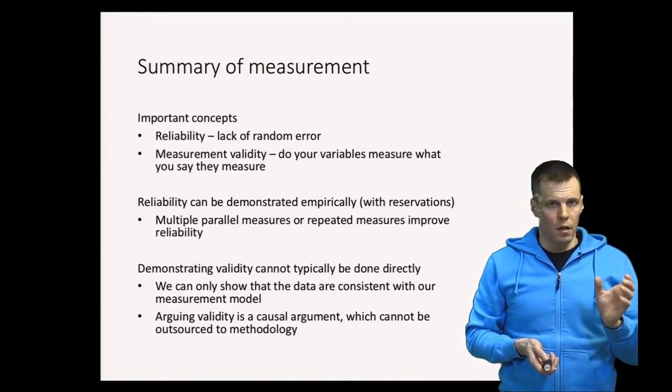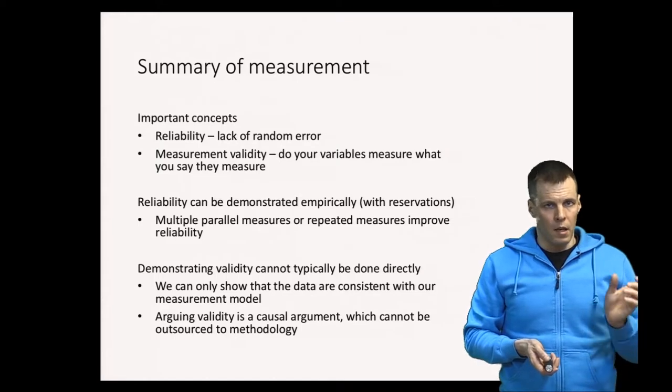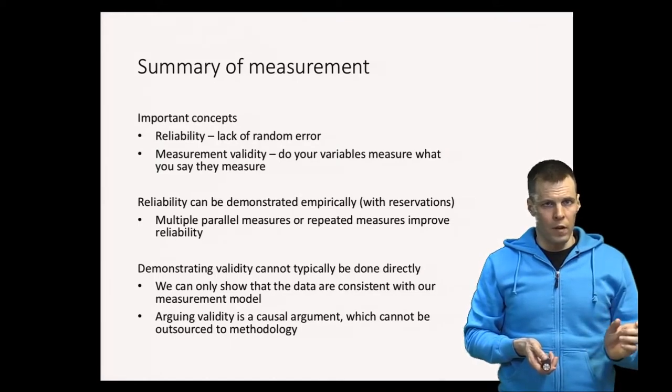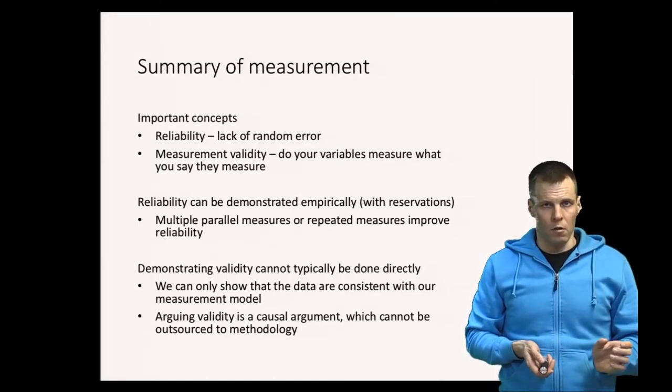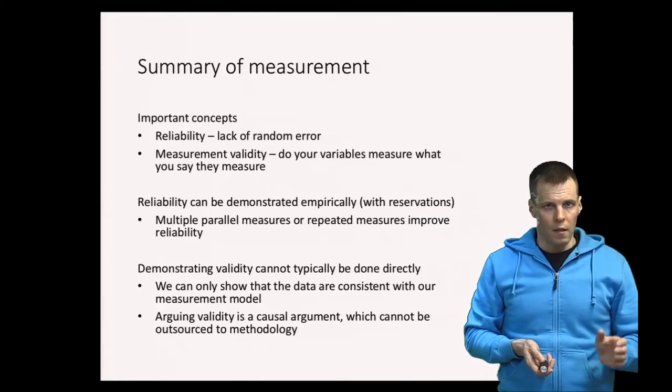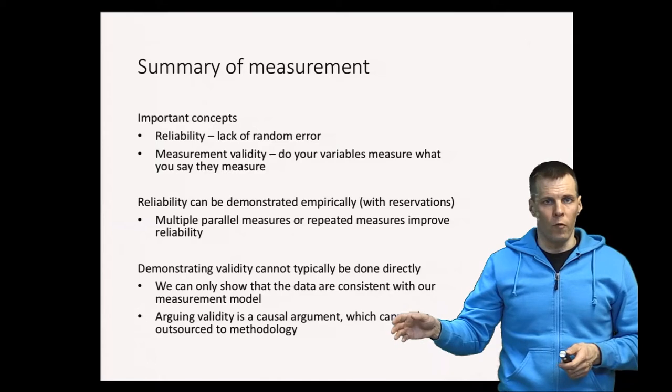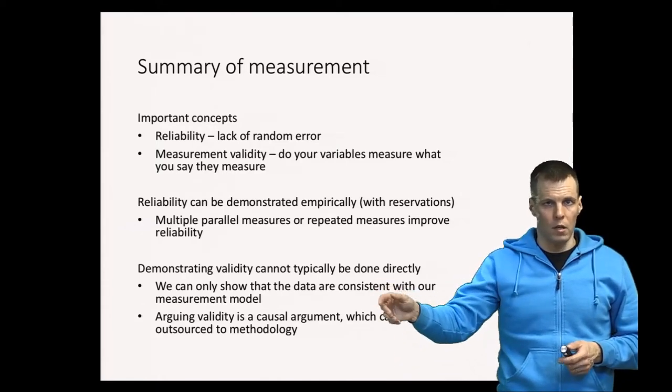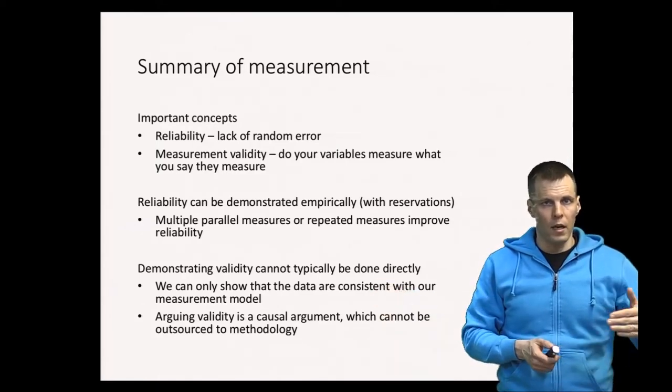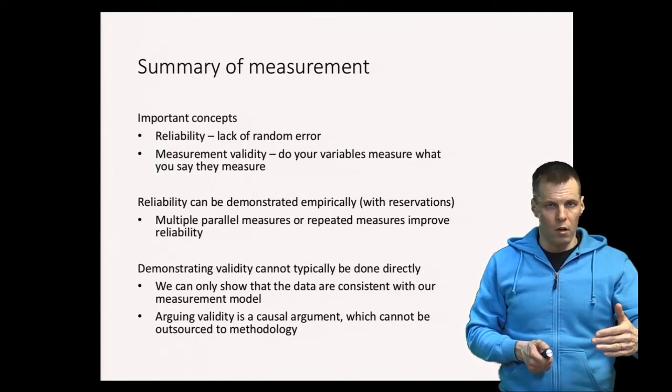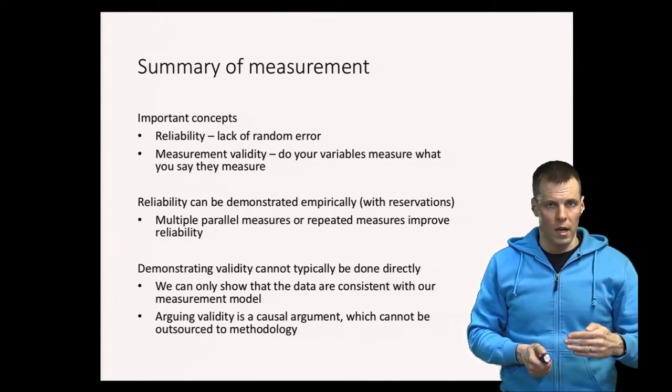So the idea of construct validity was that if a measure for innovativeness is a valid measure for innovativeness, then it should be positively associated with any measure of any possible consequence of innovativeness. So the idea of construct validity was whether the theoretical correlations and empirical correlations agree.